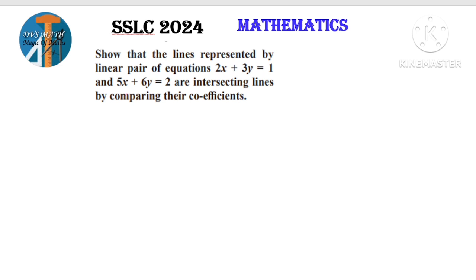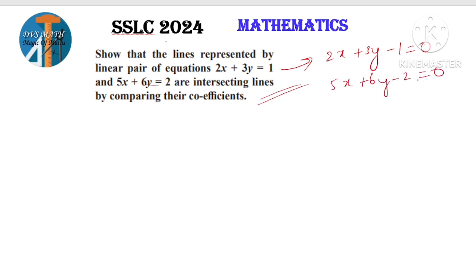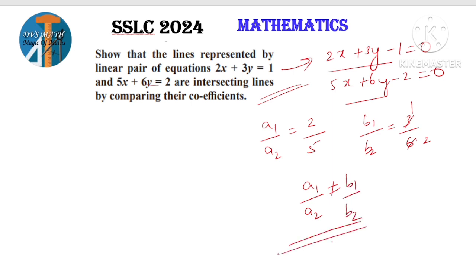Show that the lines represented by the pair of linear equations 2x plus 3y equals 1 and 5x plus 6y equals 2 are intersecting lines by comparing their coefficients. Write in standard form. a1 by a2 equals 2 by 5. b1 by b2 equals 3 by 6, which is 1 by 2. Since a1 by a2 is not equal to b1 by b2, these are intersecting lines. Just compare the coefficients, check whether they are equal or not equal, then write the type of lines.